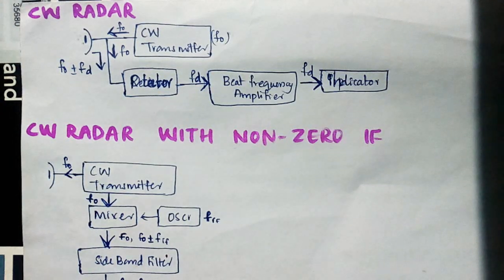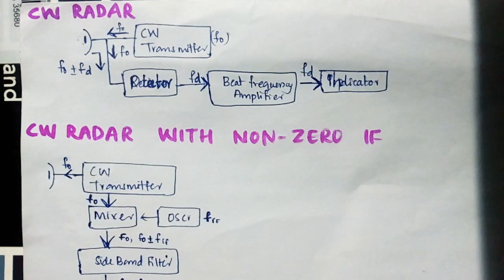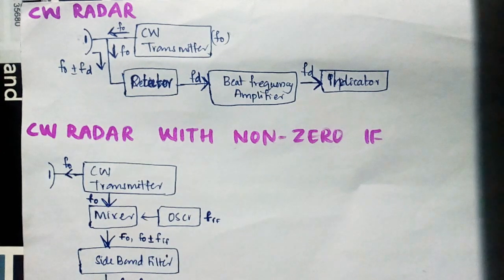Hi friends, today we are going to study about continuous wave radar block diagrams. In the simple case we have a single antenna, and the second case with non-zero IF we have two antennas.